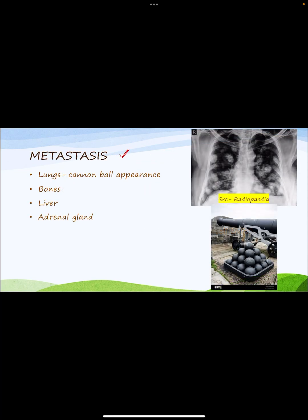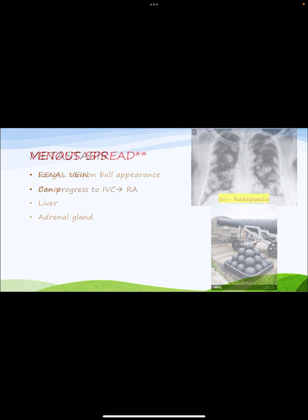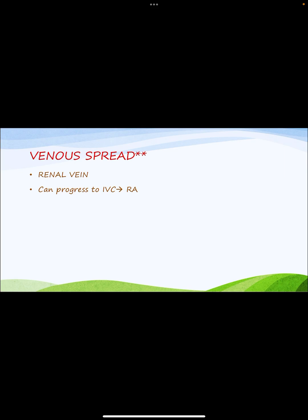Regarding metastasis, RCC spreads to the lungs and gives a cannonball appearance — sharply demarcated, well-circumscribed nodules. Other important metastatic sites are bones, liver, and adrenal gland. RCC is angioinvasive, especially invading the renal vein in the form of columns. This spread can progress to the inferior vena cava and rarely to the right atrium in aggressive tumors.